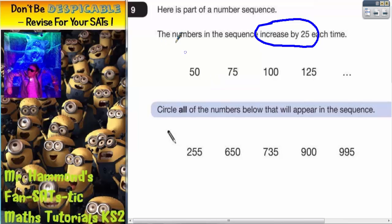A better way of doing it is to say, well, if we are increasing by 25 each time, the next number here would actually be 150. Then the next one after that would be 175, then 200, then 225.